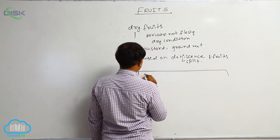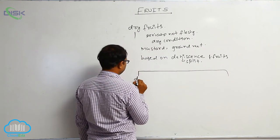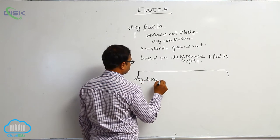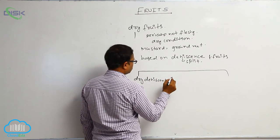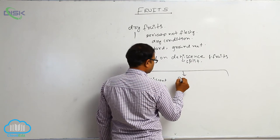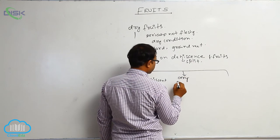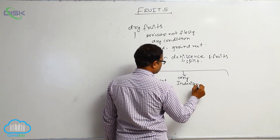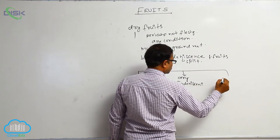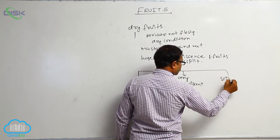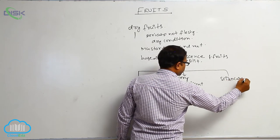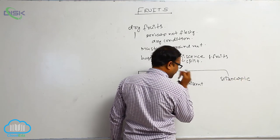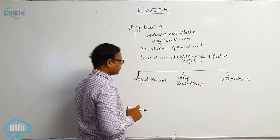First is known as dry dehiscent. Second one is dry indehiscent. Third one is schizocarpic. Schizocarpic means it is showing both dehiscent character and indehiscent character.